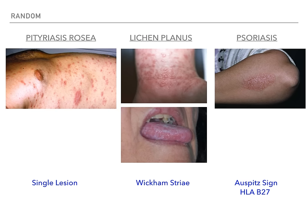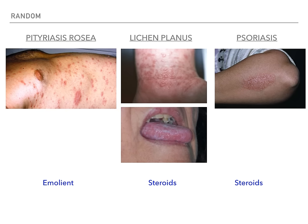For psoriasis, remember two things: the Auspitz sign — if you scrape the lesion off, you'll see pinpoint bleeding — that's very high yield. And don't forget psoriasis's association with the HLA-B27 diseases. If they ask what else the patient is at risk for, it's going to be your HLA-B27s. For treatment: pityriasis rosea — emollients, there's really no treatment, it's self-limiting. Lichen planus and psoriasis both get steroids because they are inflammatory processes.